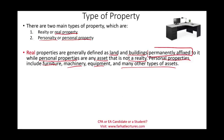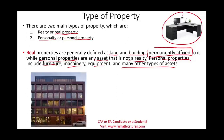For example, can you move this desk around? Yes, you can. Can you move this building? No, you cannot — this is real property. Can you move this van? Yes, you can move the van, but you cannot move the building. So the first thing to understand is that we have two types of property: real and personal property.